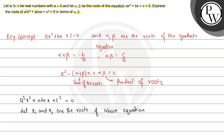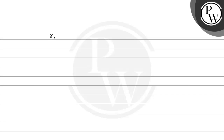We get x₁ + x₂, that is the sum of the roots, is equal to −abc/a³ by using the key concept. And the product x₁·x₂ is equal to c³/a³.